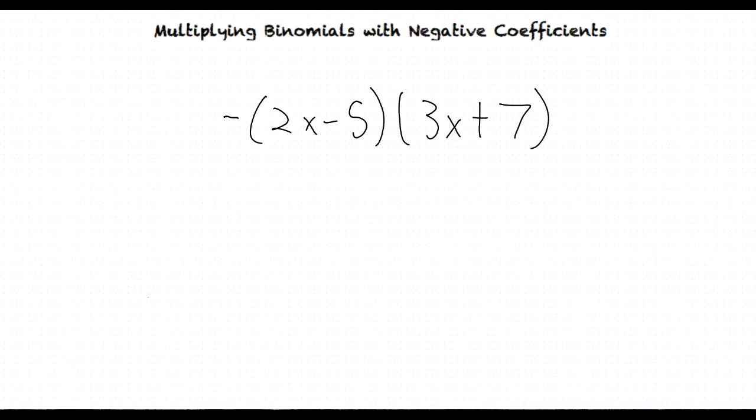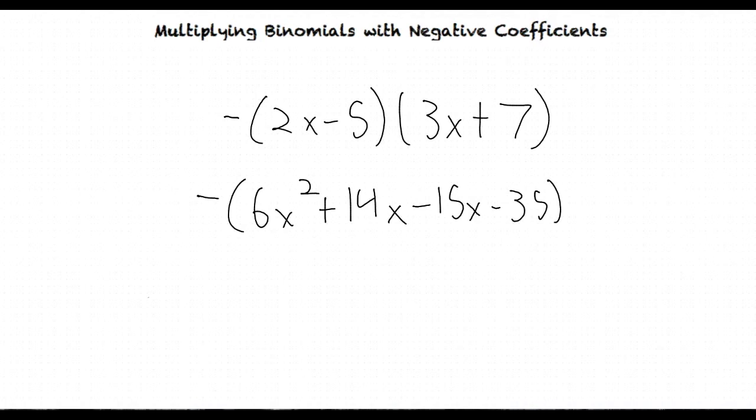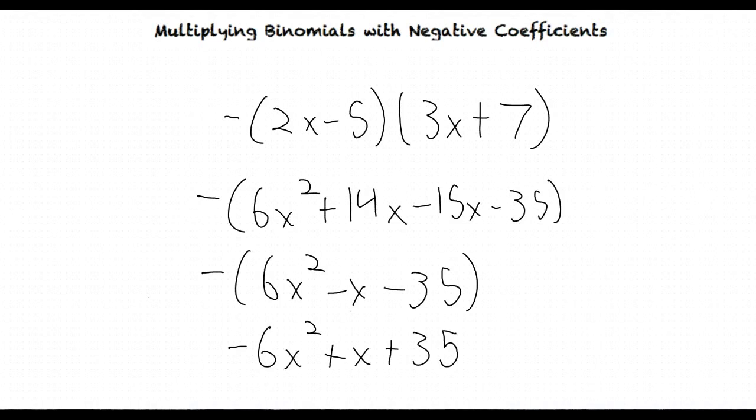So we first factor out the binomials, which is negative times 6x squared plus 14x minus 15x minus 35. We then simplify to negative times 6x squared minus x minus 35. After that, we just factor in the negative into our binomial and get the answer negative 6x squared plus x plus 35.